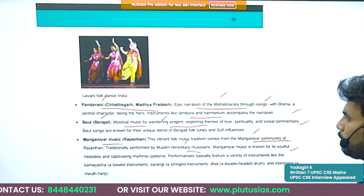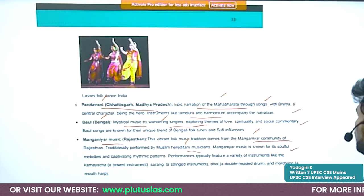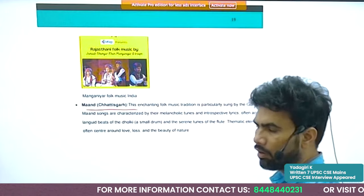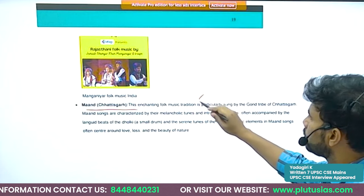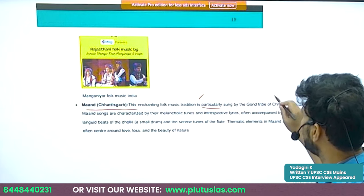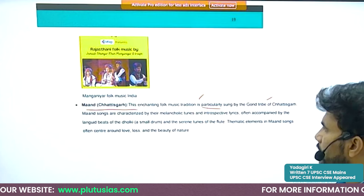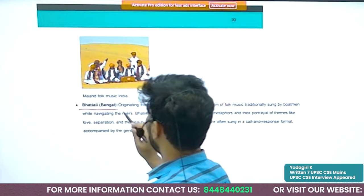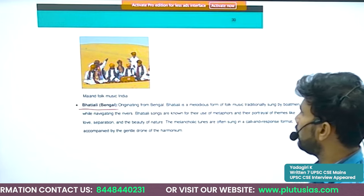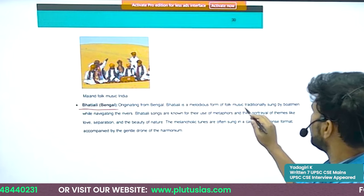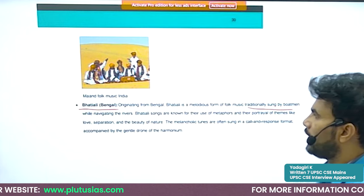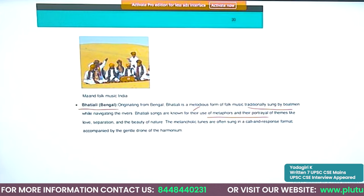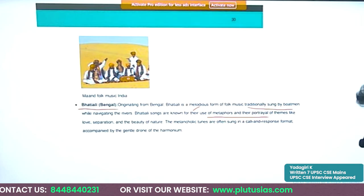Manganiyar music is associated with Rajasthan, coming from the Manganiyar community and traditionally performed by Muslim hereditary musicians; it is known for soulful melodies and captivating rhythmic patterns. Mand is associated with Chhattisgarh and is a music tradition particularly sung by the Gond tribe. Bhatiyali is from West Bengal, traditionally sung by boatmen while navigating rivers, known for metaphors and themes of love, separation, and the beauty of nature.